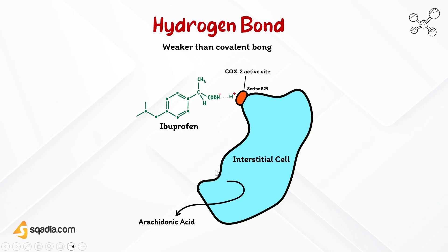As an example, consider the interaction between ibuprofen and its target receptor, the enzyme cyclooxygenase-2 (COX-2). Ibuprofen is a non-steroidal anti-inflammatory drug used for pain relief and reducing inflammation. Ibuprofen undergoes hydrogen bonding with COX-2 at the active site. Specifically, serine 529 establishes a hydrogen bond with the ibuprofen carboxyl group; the carboxylic acid moiety acts as a hydrogen bond donor, while the oxygen atom within it acts as a hydrogen bond acceptor that bonds with the hydrogen of the serine residue.